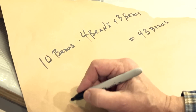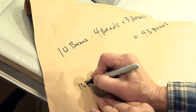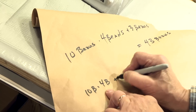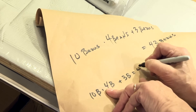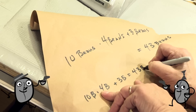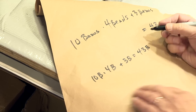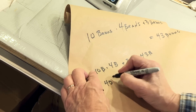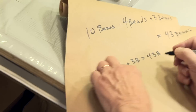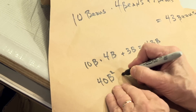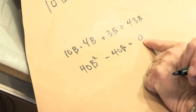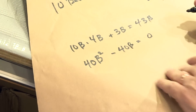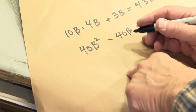Ten beans times four beans and add three more beans makes 43 rich coffee beans — let's solve this, substituting B for beans. 10B times 4B plus 3B equals 43B. Combine terms on the left — first, multiply: 40B squared. Combine these on the left side: 40B squared minus 40B equals zero. That's a quadratic equation.